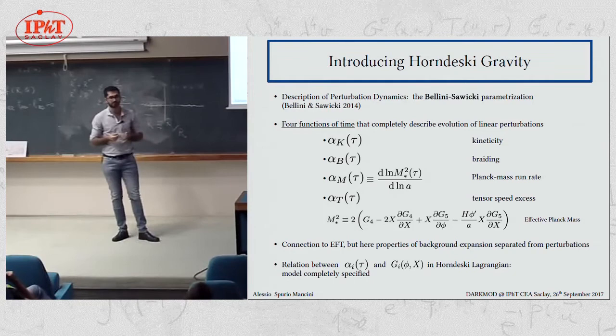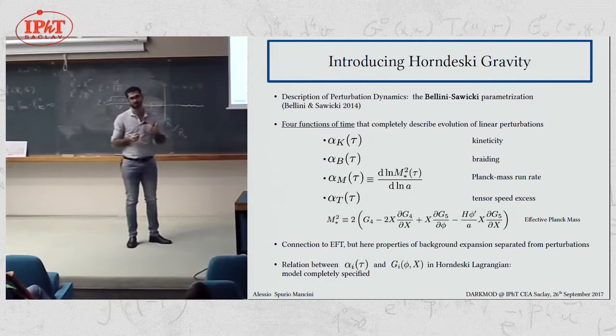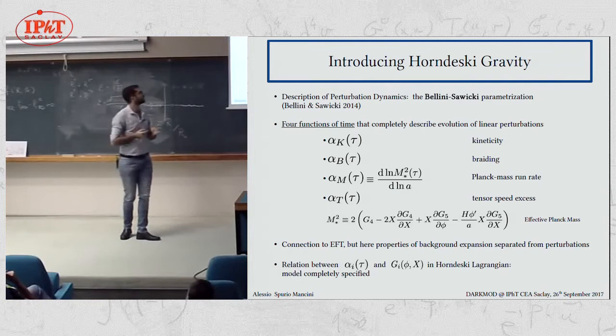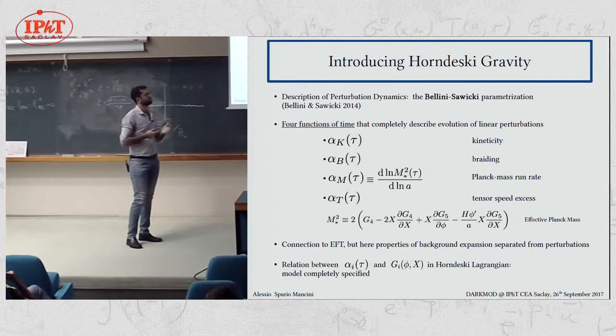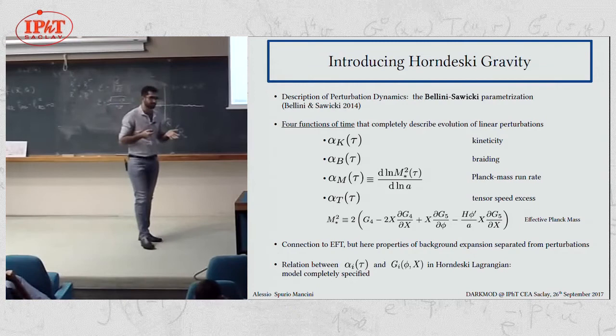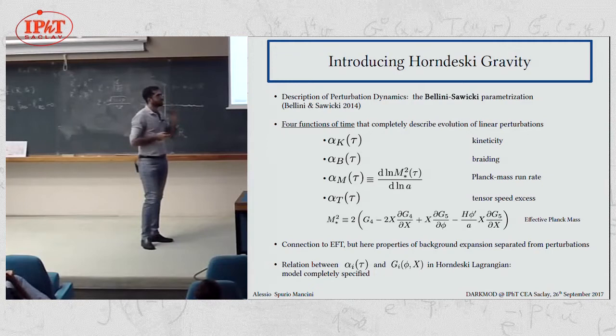There are some features that are very nice about this parametrization. One is that they are completely perturbed level quantities, and they have nice physical interpretations, as you can see here. For example, alpha_M is defined in terms of the effective Planck mass m_star. We're not spending too many details on this because we heard a lot about this yesterday. But just to say that the target of this project is to put constraints on alpha functions. Because there must be a relation then between alpha and the G functions in the Lagrangian, so that if one fixes the alpha, then it fixes also the model in the Lagrangian.